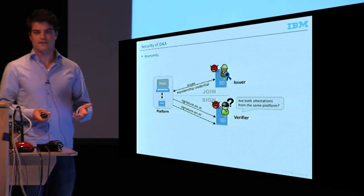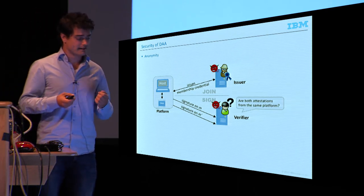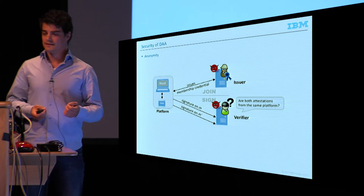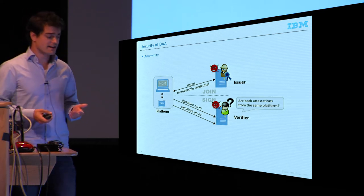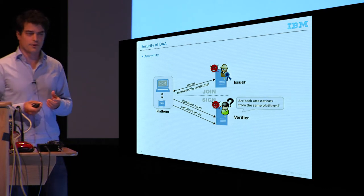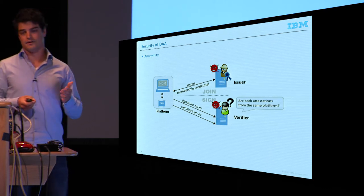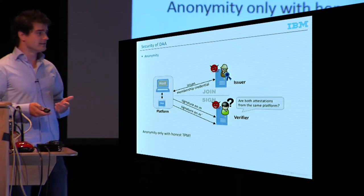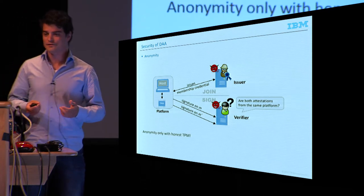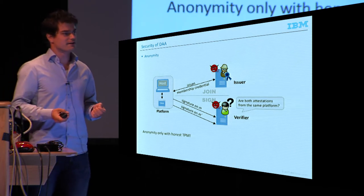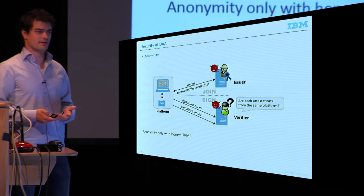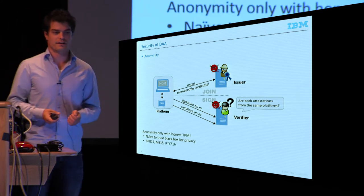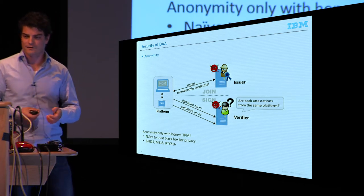There is one surprising thing: in all existing definitions of anonymity, we trust the TPM — we trust that it follows the protocol. This is not what you would expect, because one of the reasons to introduce DAA was to address privacy concerns about some chip people don't trust. Yet the notion of privacy requires us to trust that chip in the first place. Recent revelations have also shown it is quite naive to trust a piece of hardware running crypto to preserve your privacy. In different fields of cryptography, people have looked at subversion resilience — what security can we have if we run the wrong algorithms?